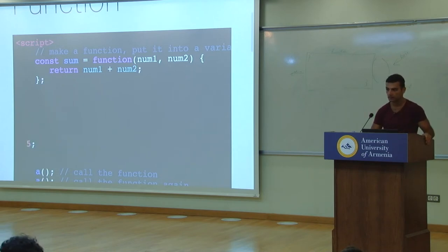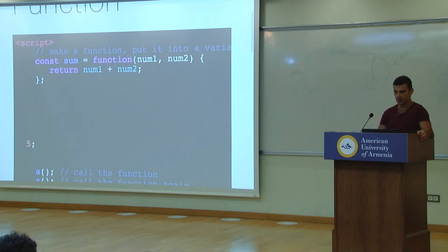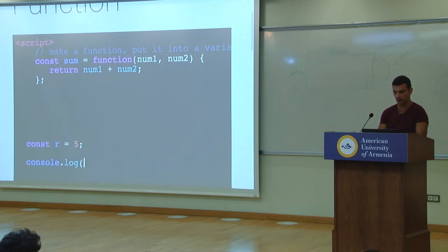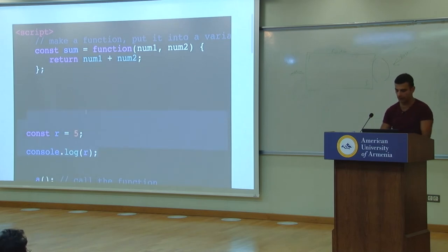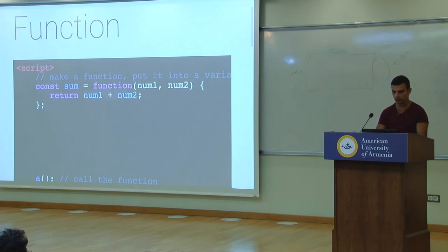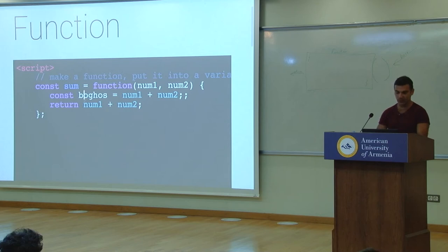We don't need to write const result inside the function — we could also create some variable, call it whatever, and then return that variable. Do you see how it's exactly the same thing? In one case, you're taking the value, giving it a name, and returning the name, which is the value — same thing.